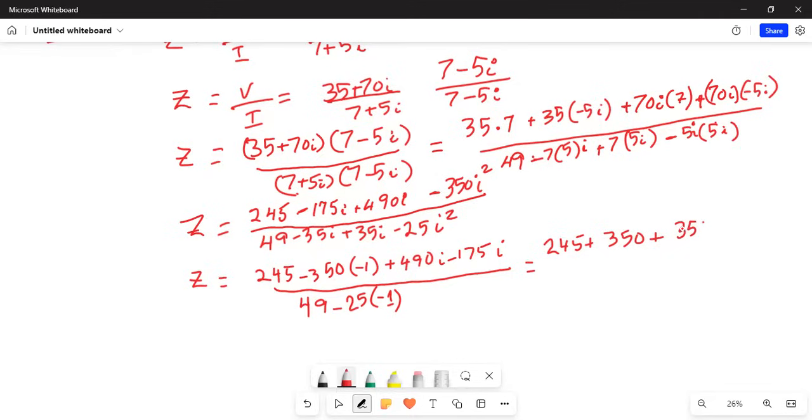I have 245 plus 350 because two minuses make it positive, plus 350, and plus 490 minus 175 is 315i. And the whole thing is divided by 49 plus 25, two minuses make it positive. So Z is equal to 245 plus 350 is 595 plus 315i divided by 74 in the denominator.